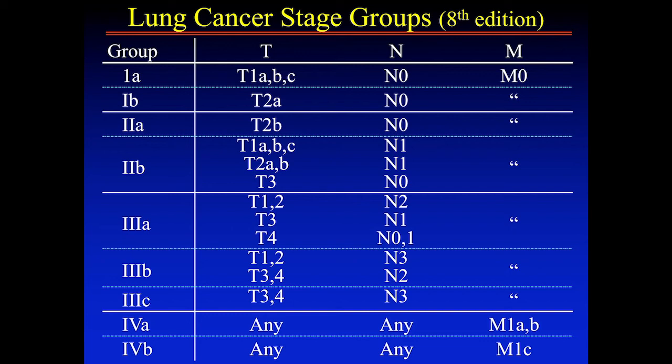Stage 4 is divided into 4A and 4B, depending on whether you have pleural implants or a distant metastasis versus multiple distant metastases.